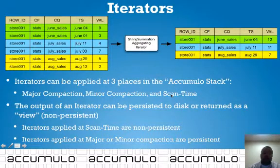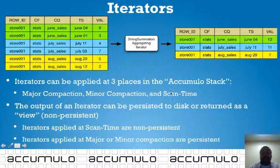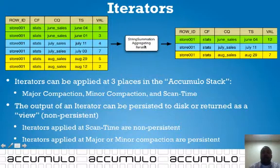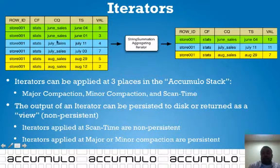It is important to note that the output of an iterator can be persisted to disk or returned as a non-persistent view. When an iterator is applied at scan time, the data is non-persistent — in other words, even if you apply the iterator at scan time, the data will still look the same in storage.